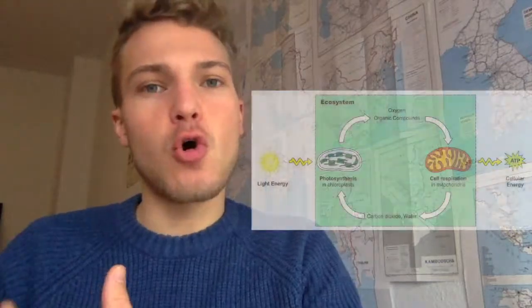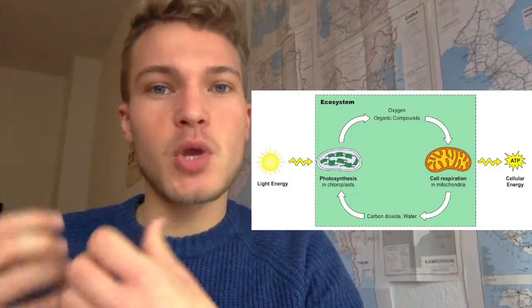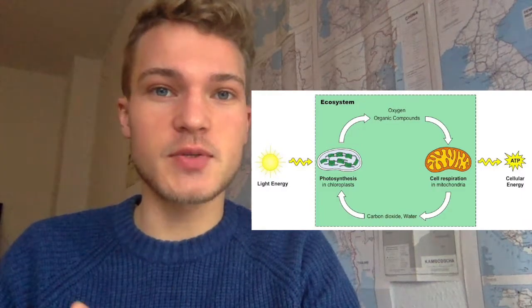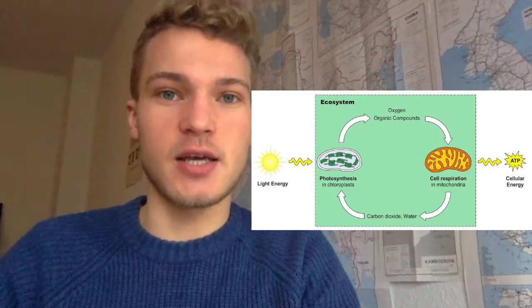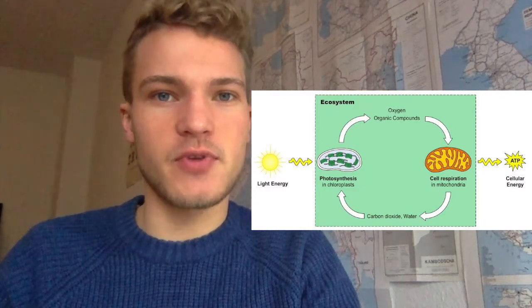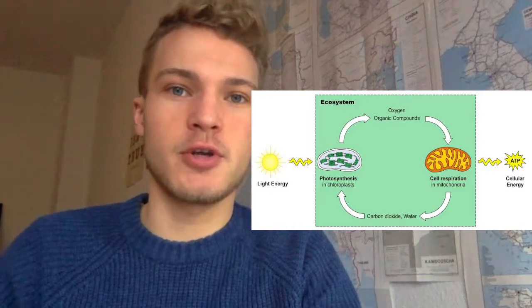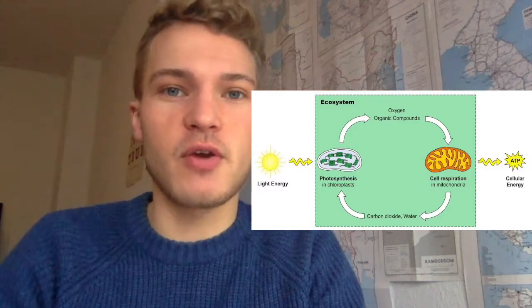Now let's talk about photosynthesis. As I said, photosynthesis is essentially the complete opposite of aerobic cellular respiration. In cellular respiration, we take in an organic compound like glucose and oxygen, create ATP, and give off carbon dioxide and water as byproducts. In photosynthesis, we take in light energy from the sun, carbon dioxide from the atmosphere, and water — and what we create is an organic compound, with oxygen as a byproduct. If you look at the chemistry, it's literally the reverse. The biochemical processes involved are also very similar.